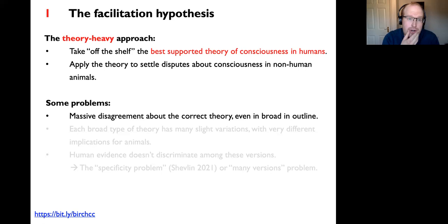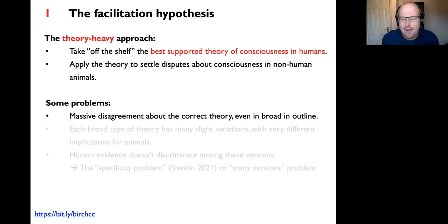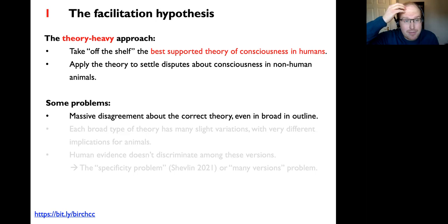I call what Dennett describes a theory-heavy, human-centered approach. We're supposed to take off the shelf the best-supported theory of consciousness in humans and apply that theory to settle disputes about consciousness in non-human animals. There's a clear order of precedence: human research has to come first; we develop a well-confirmed theory of consciousness in humans, and then the research on animals is simply a matter of testing whether animals meet the criteria implied by that theory.